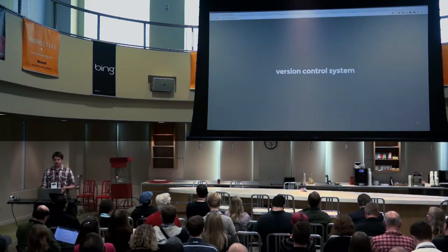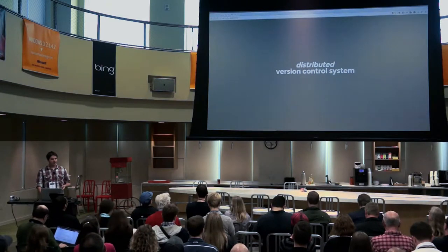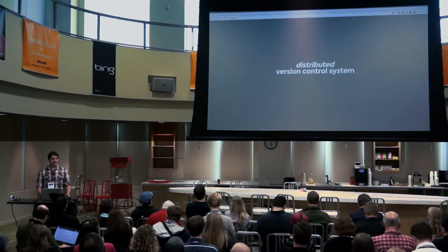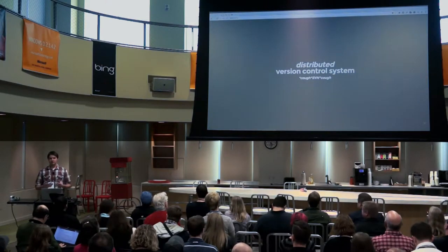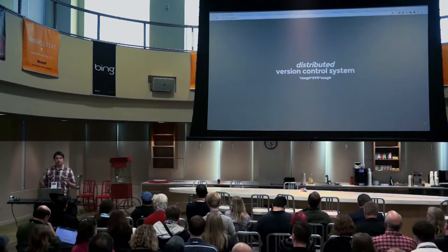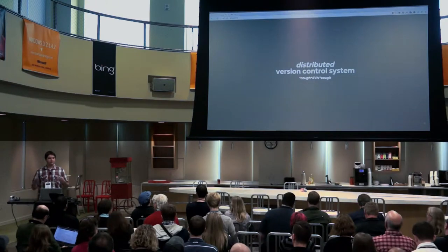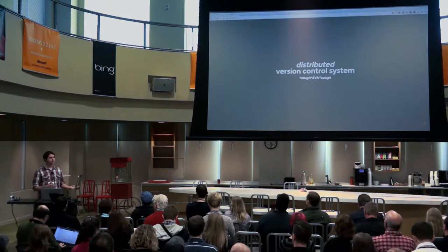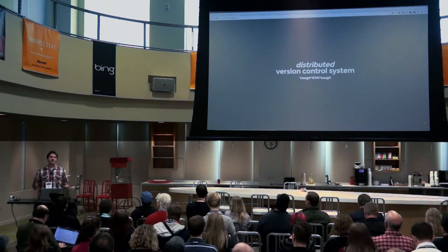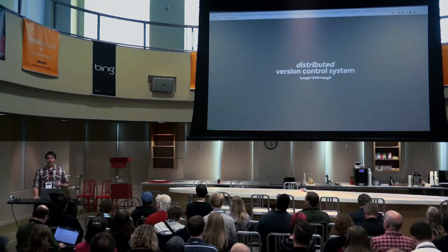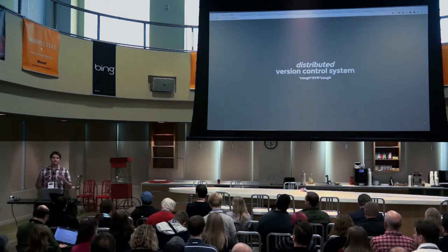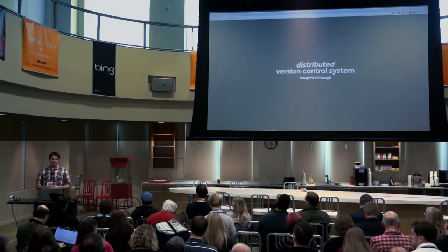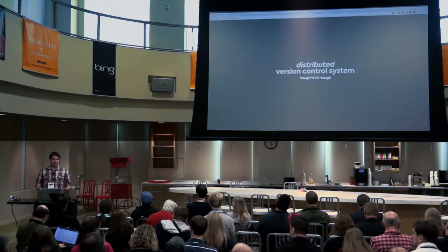Git is actually a distributed version control system. Unlike certain other version control systems, Git is not centralized — all of your changes, revisions, and notes are stored on your local computer. Other version control systems use a centralized approach where everything is stored on a remote server, which leads to problems: how's your connection, do you need a VPN, are you in an airport without Wi-Fi, what if the server goes down? With Git, everything is on your local computer, giving you really fast access to all of your history.